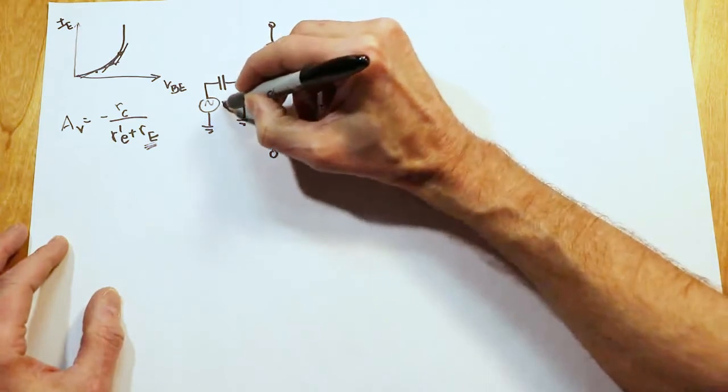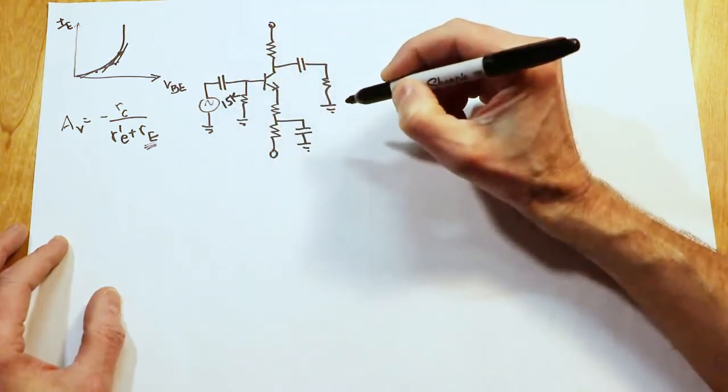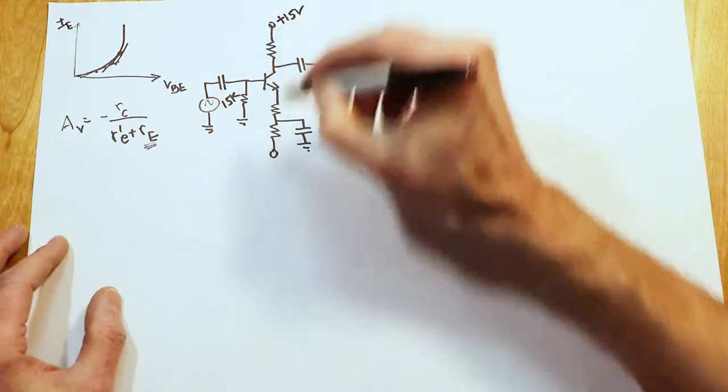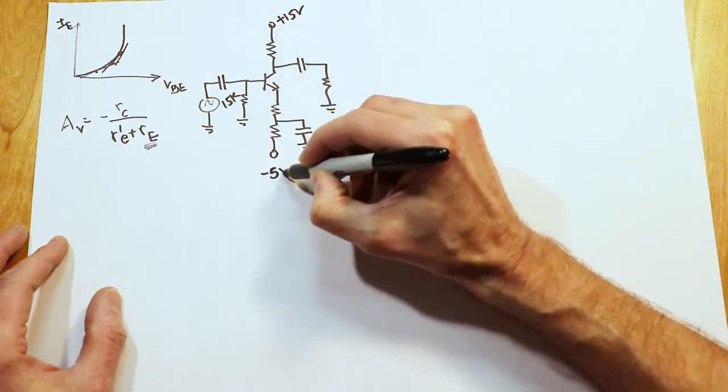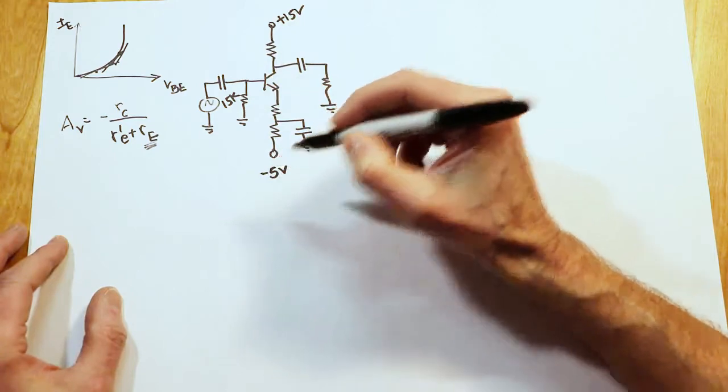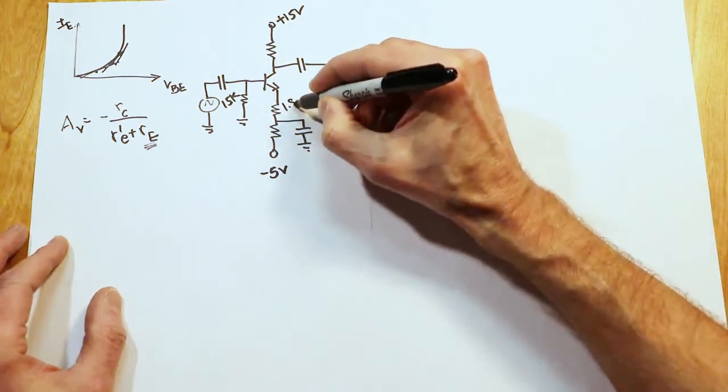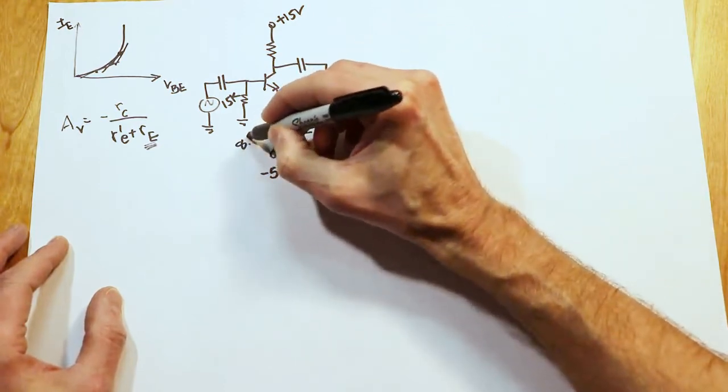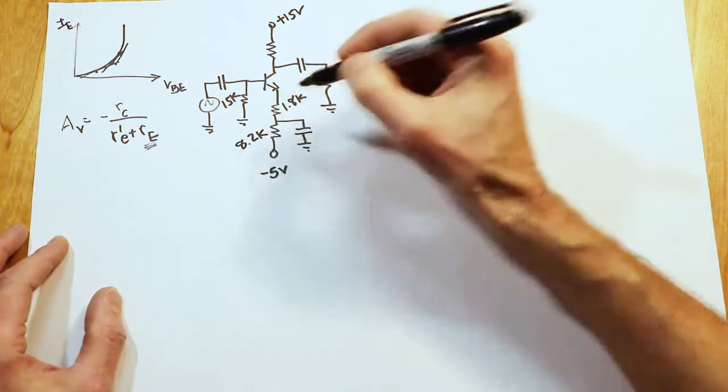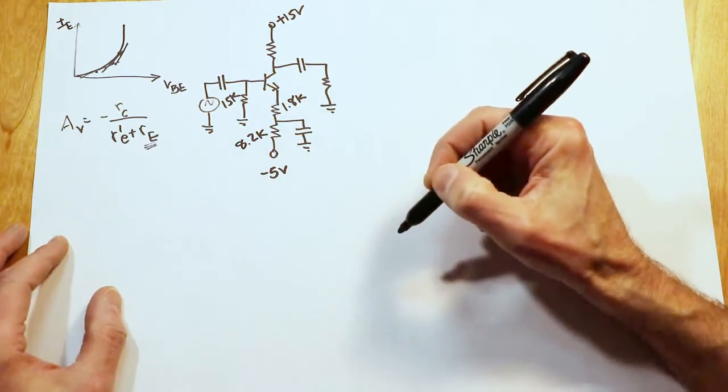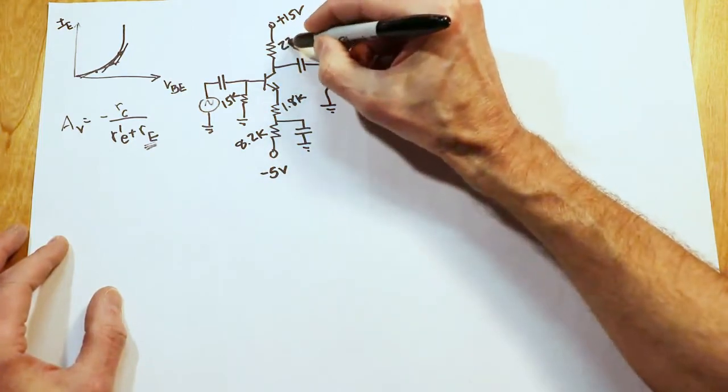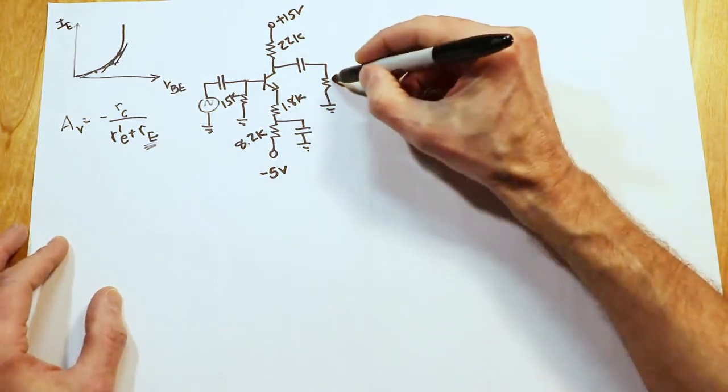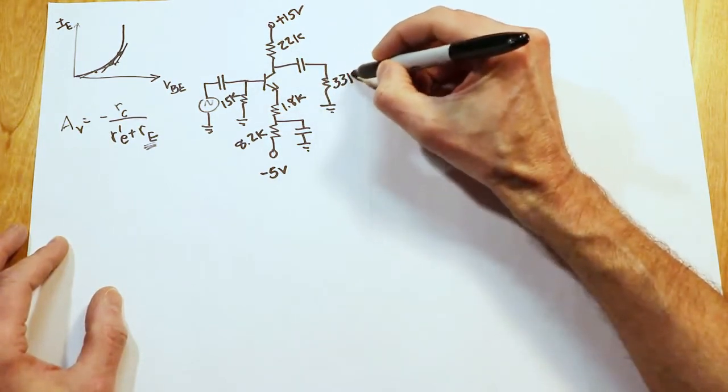Put some numbers in here. Let's say this is 15K. Power supplies are plus 15 and minus 5. The resistors in the emitter will make a 1.8K for the swamping resistor, and an 8.2K for the remaining resistance. Now, the collector biasing resistor will be 22K, and the load resistor will be 33K.